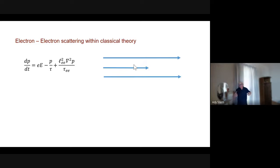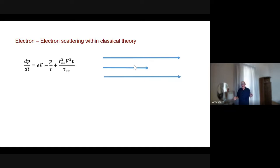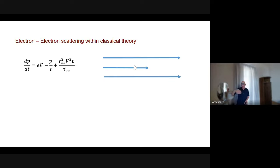When you scatter off another electron, the other electron tries to convince you to move at its velocity. If the other electron is faster, you come out of the collision running faster; if slower, you come out going slower. If electrons to your right are faster and electrons to your left are slower, you come out basically unaffected. That observation, expressed as an equation, comes out to: the rate at which you lose momentum is proportional to the second derivative of the momentum density — the electron-electron mean free path acts as a diffusion coefficient.